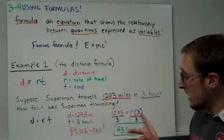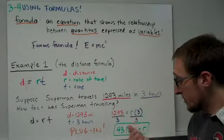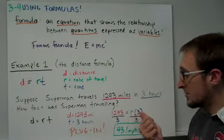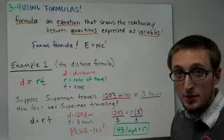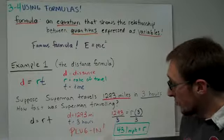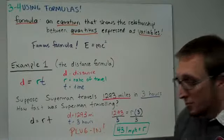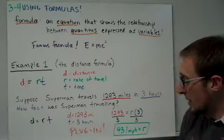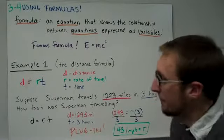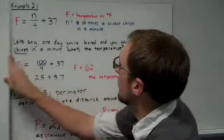To solve for R, we would just divide both sides by three, because it's R times three, and the inverse of multiplying is dividing. So when we do 1,293 divided by three, you actually get a nice easy number. It's 431 miles per hour.